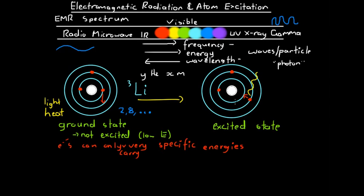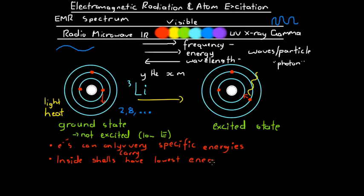Another thing to be aware of is that the inside shells are the lowest energies. Electrons can only carry very specific energies, and the inside shells have the lowest energies. So as we move further and further away from the nucleus, we're going to get more and more energetic. So if we're getting excited, we are moving away from the nucleus — we're not going to get excited and move towards the nucleus.